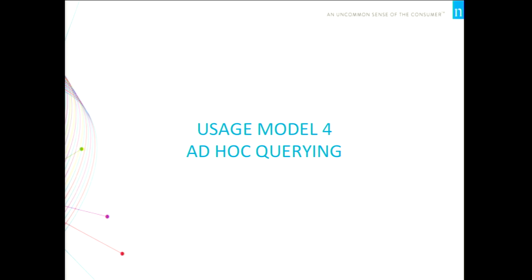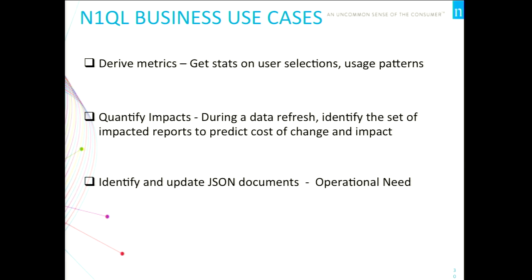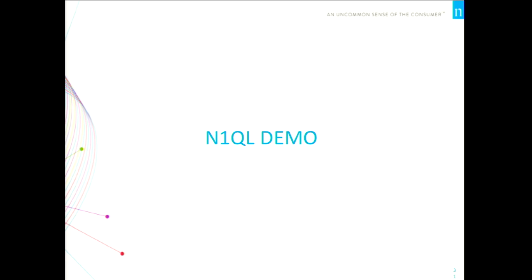The fourth use case is ad hoc querying. Previously we had to statically identify upfront what sections of the document could change. With ad hoc querying via N1QL, you can just run a SQL query and introspect any section of the document. We started beta testing N1QL with Couchbase about two months ago. I'll show in the demo how we derive metrics, quantify impact, and identify JSON updates.